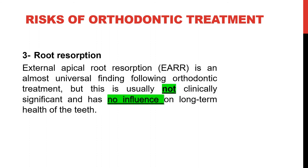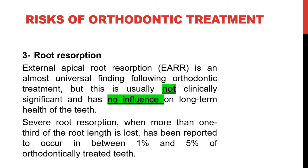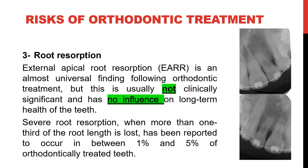The third risk is root resorption. External apical root resorption is an almost universal finding following orthodontic treatment. It is very common but usually not clinically significant and has no influence on the long-term health of the teeth. Severe root resorption — meaning more than one-third of the root length is lost — has been reported to occur in between one and five percent of orthodontically treated teeth, and this radiograph demonstrates severe resorption of the central and lateral incisors.